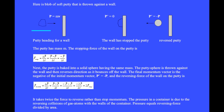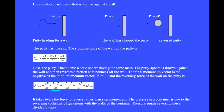A blob of soft putty of mass m is thrown against a wall. The stopping force is delta-p over delta-t equals (p-final minus p-initial) divided by delta-t. Since the final momentum is zero, we have minus the initial momentum p divided by delta-t. When the putty is baked into a solid sphere of the same mass, it bounces off the wall. The final momentum vector is the negative of the initial: p-prime equals minus p. The reversing force is delta-p over delta-t equals (minus p minus p) over delta-t equals minus 2p over delta-t, which is twice the stopping force.